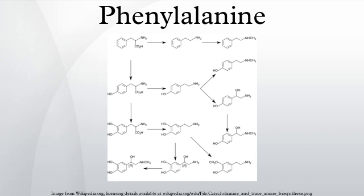The first description of phenylalanine was made in 1879, when Schulze and Barbieri identified a compound with the empirical formula C9H11NO2 in yellow lupine seedlings. In 1882, Erlmere and Lippe first synthesized phenylalanine from phenylacetaldehyde, hydrogen cyanide, and ammonia.